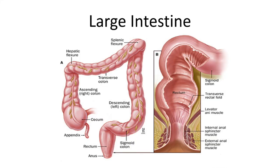I would like to start with a picture of the large intestine, which is the most distal segment of the gastrointestinal tract. Here we can see the appendix, the ascending colon, then the transverse colon, and then the descending colon, and then the last portions as the sigmoid colon and the rectum leading to the anal canal.